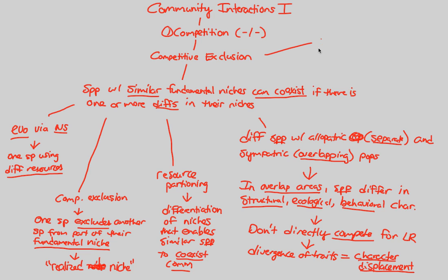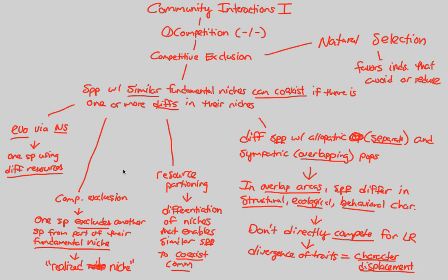Finally, natural selection plays a big role in competitive exclusion. Natural selection does not favor competition — it actually favors individuals that avoid or reduce competition, because competition is a minus-minus interaction. Both individuals lose to some extent; one might win but won't experience its full fundamental niche, and the other might go extinct, as with Paramecium caudatum. Natural selection therefore favors individuals that avoid or reduce competition for resources completely.